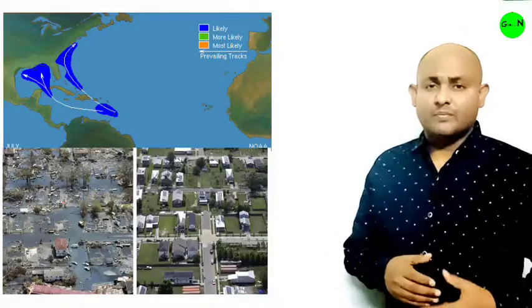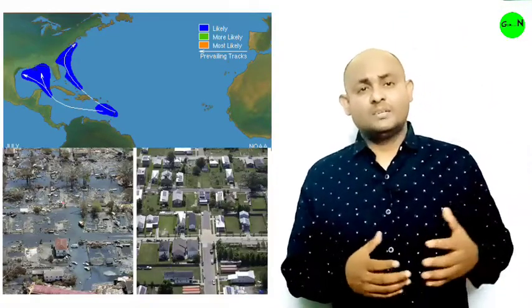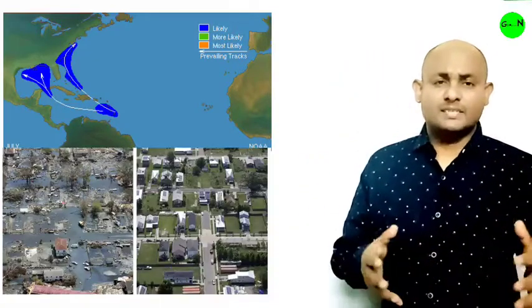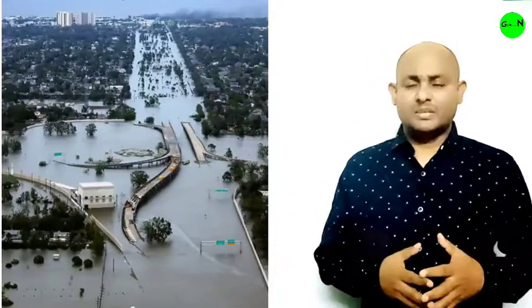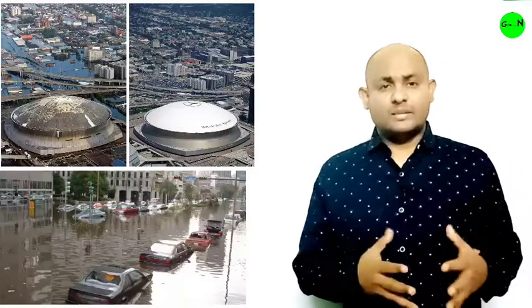Hurricane Katrina struck the coastal region of the southern United States on August 29, 2005 — most significantly New Orleans. The levee breaches caused extreme water, wind, and rain damage that destroyed more than one million homes and businesses. An estimated 1,833 people died in the hurricane and flooding, though the exact number is still unknown. Katrina was by far the most destructive storm to strike the United States, causing approximately 108 billion dollars in damage.